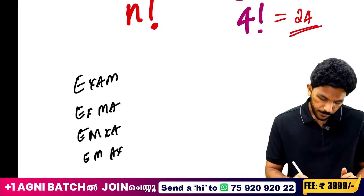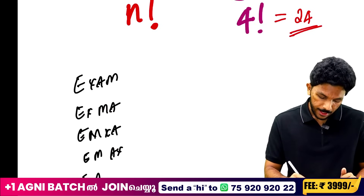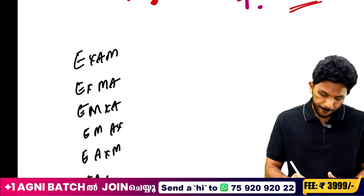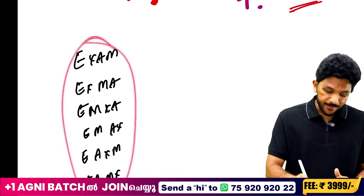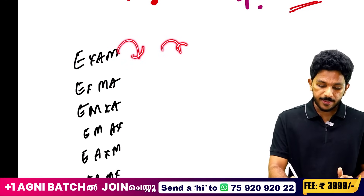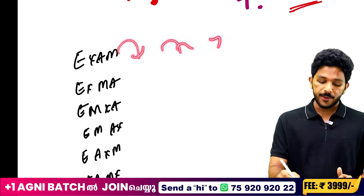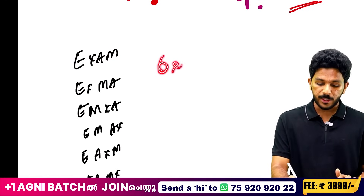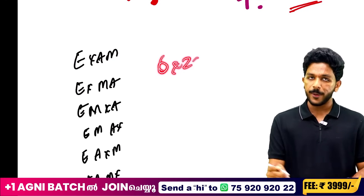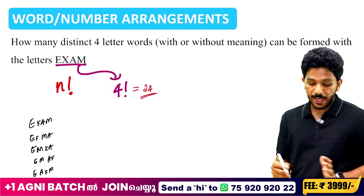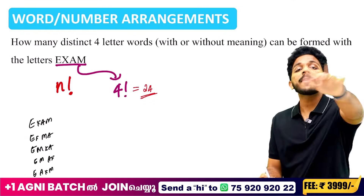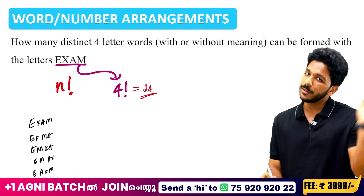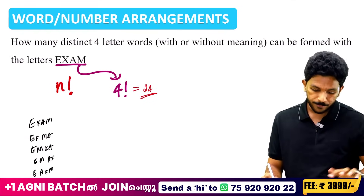The letters are E, A, X, M — four letters. If you start with E, that's 3! arrangements; total is 4! = 24. This is the simple formula. There are no repeated letters in EXAM, so the answer is simply 4! = 24.